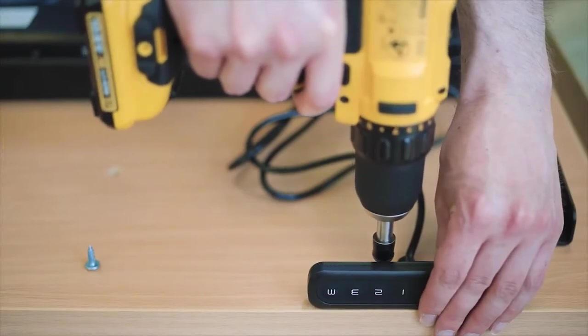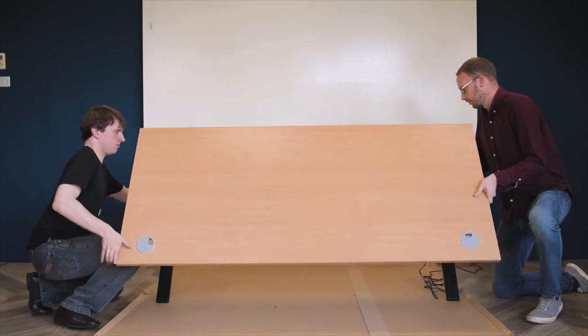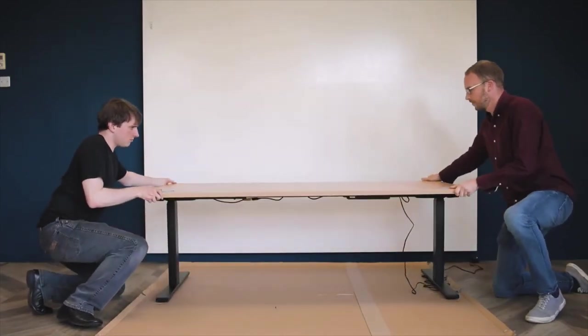Align the control panel to the pre-drilled holes along the front edge of your desk. Once this is complete, ask another colleague to help you turn your desk the right side up.